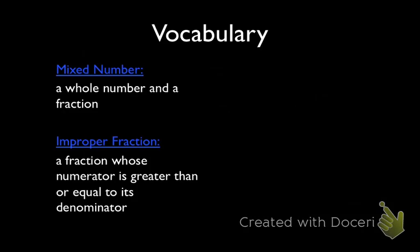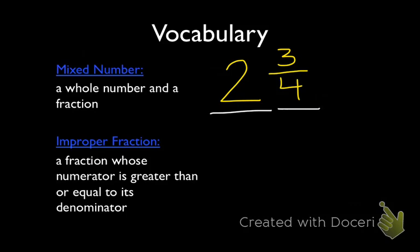First, let's go over some vocabulary. A mixed number is going to be a whole number and a fraction. So for example, if I had 2 and 3 fourths, that would be considered a mixed number, because our whole number is 2 and our fraction is 3 fourths.